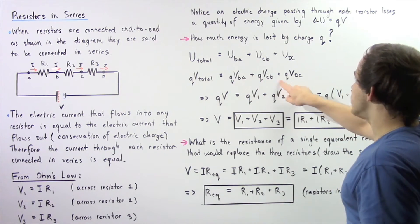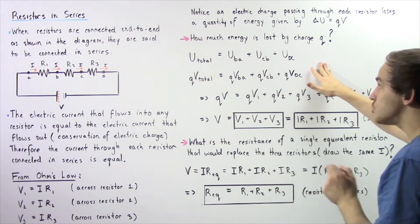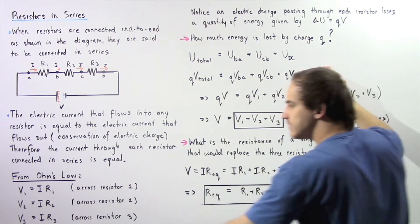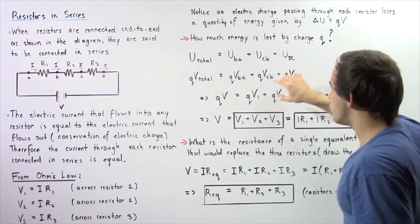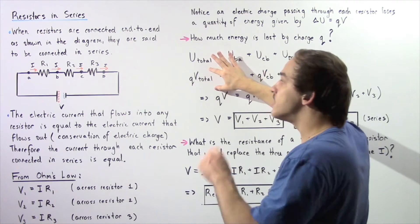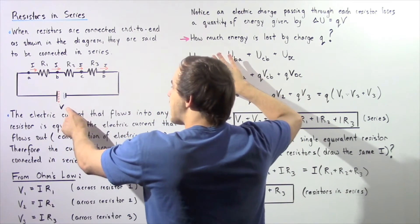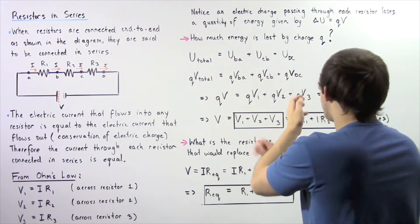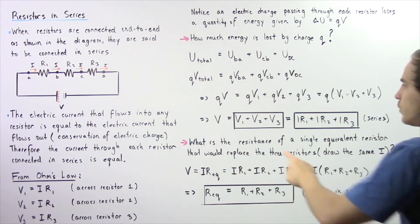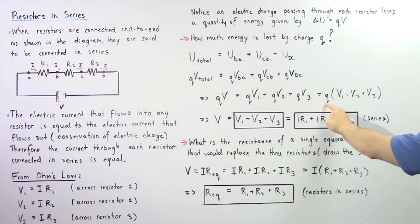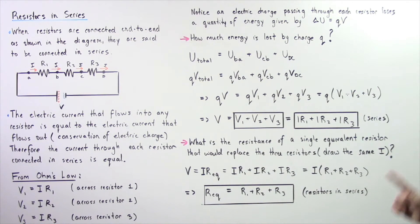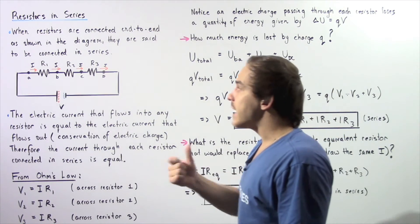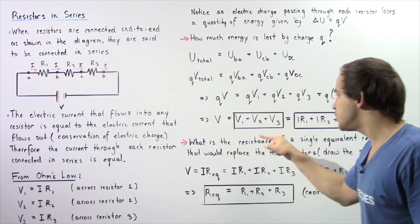Notice the Q's appear on each term, so we can factor them out. Also notice that VBA is simply V1, VCB is simply V2, and VDC is simply V3. We replace each with V1, V2, and V3, and replace V total — the voltage difference between point A and point D — with V, the voltage across the battery. Canceling the Q's from both sides, we see that the total voltage V is equal to V1 plus V2 plus V3, the sum of the voltages across each resistor.